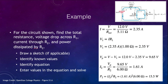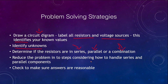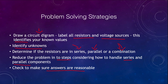Here are problem-solving strategies for circuit problems. First, if not given one, draw a circuit diagram and label the resistors, voltage sources, and any known currents. Identify what you're looking for. Determine whether you have series resistors, parallel resistors, or a combination. Reduce the problem into steps — sometimes you need to find the current first to determine power or other quantities. Finally, check that your answers are reasonable: currents and voltages should add up correctly for series and parallel circuits.